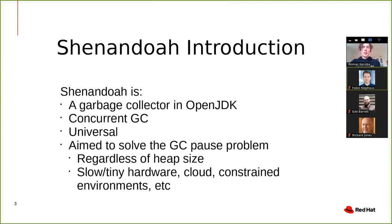What is Shenandoah? It is a garbage collector in OpenJDK. It is a concurrent GC which was originally targeted at large heaps, managing large heaps without stopping the world all that much. It turned out that it's also useful for slow and tiny hardware, cloud, and constrained environments because they have properties that mean that pauses are not very desirable. It's also universal — it doesn't have many restrictions in terms of platform or operating system support.